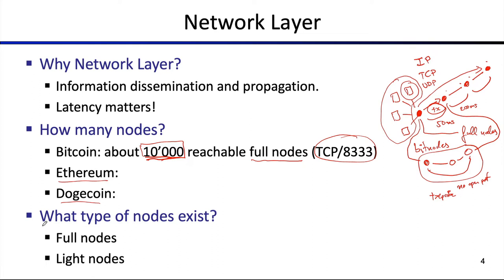We do have full nodes that host basically the entirety of the blockchain, and light nodes that might just host the chain of headers — just the block headers while omitting the transaction content. A header in Bitcoin is about 80 bytes in size, so that's a rather small amount multiplied by the number of blocks. In order to verify whether a transaction is included in a block, you can run the SPV protocol discussed earlier in the lecture. These light nodes often communicate with full nodes and are really dependent on them, connecting to between five to ten full nodes and requesting data from those.